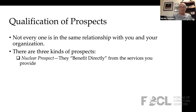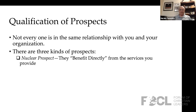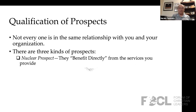Here are the three kinds of prospects that we all have. First of all, a nuclear prospect — someone who is part of an organization that benefits directly from the services you provide. Let's say you're part of a Christian school. A nuclear prospect would be someone who benefits directly from the services because their child is part of the school — they are benefiting directly from what the organization provides.